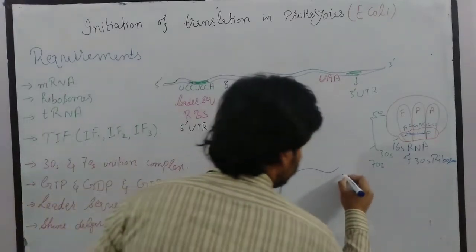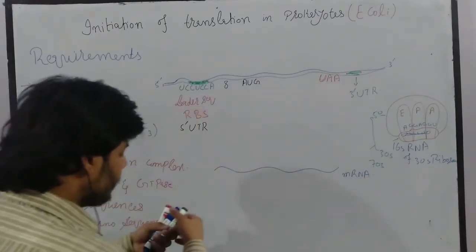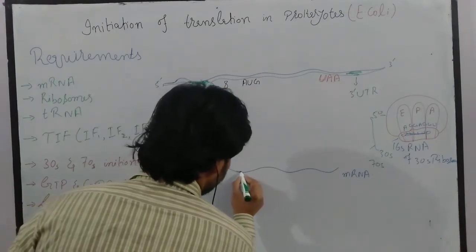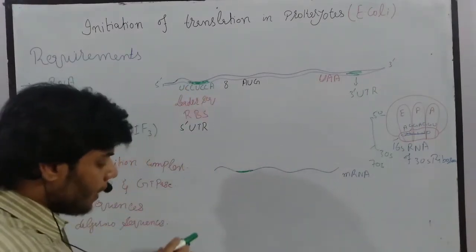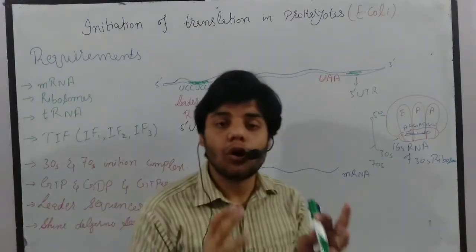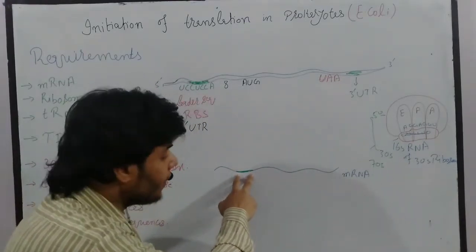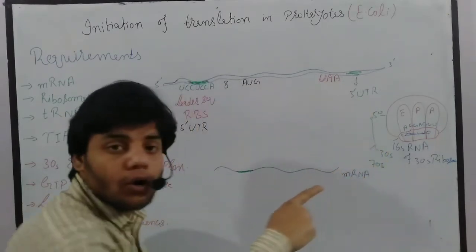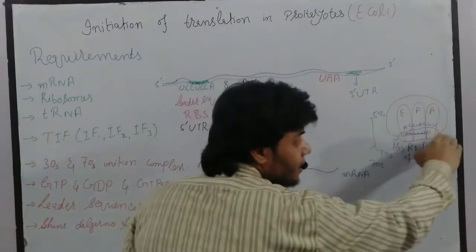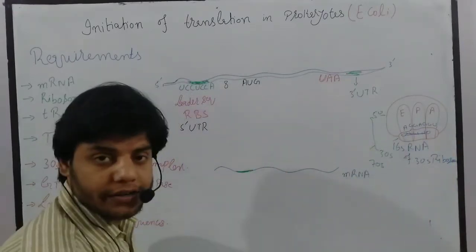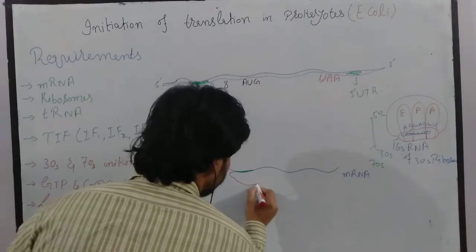Now, this is the ribosome and this is the messenger RNA with the leader sequences at that specific position. First, the 30S subunit of the ribosome gets activated and binds at that specific area because the sequences found there are complementary to the 30S subunit of the ribosome. In the 30S subunit there is 16S rRNA with sequences complementary to these leader sequences, so the small subunit of the ribosome will bind here.